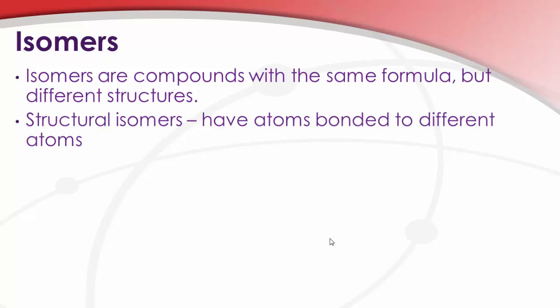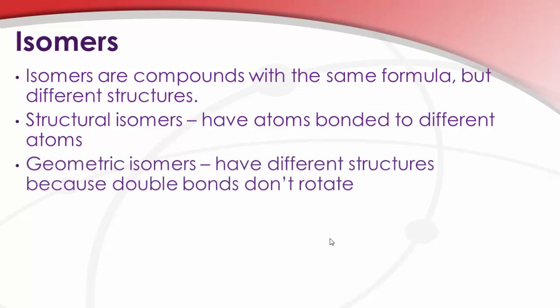Structural isomers. We've already talked a little bit about these previously. They have the same bonds, but these bonds are arranged differently. The atoms are arranged differently such that they are structurally different compounds.